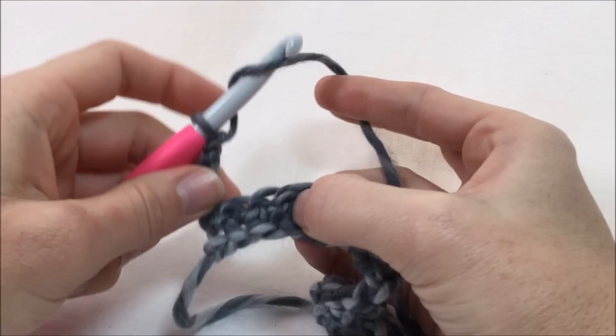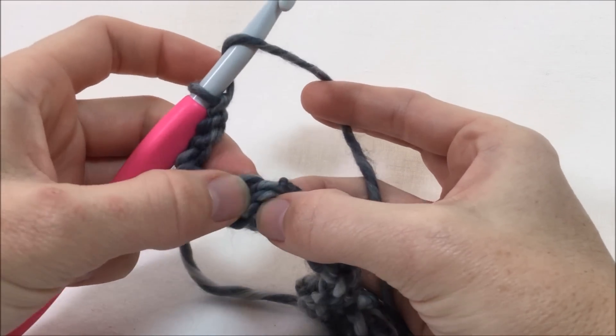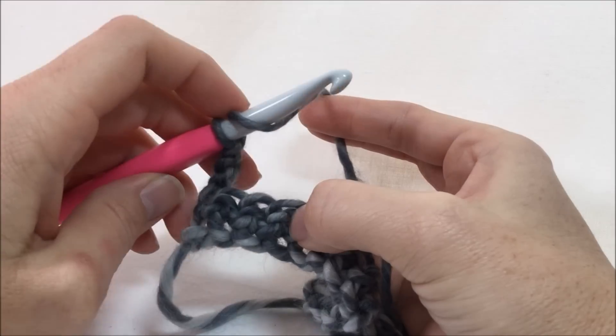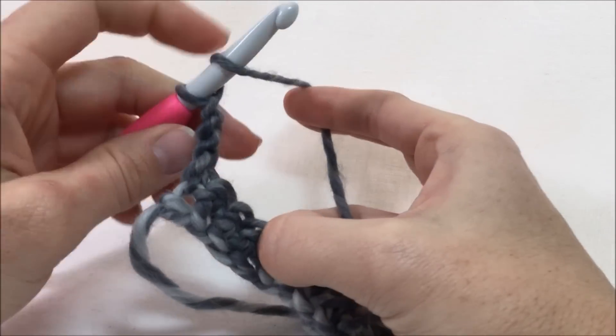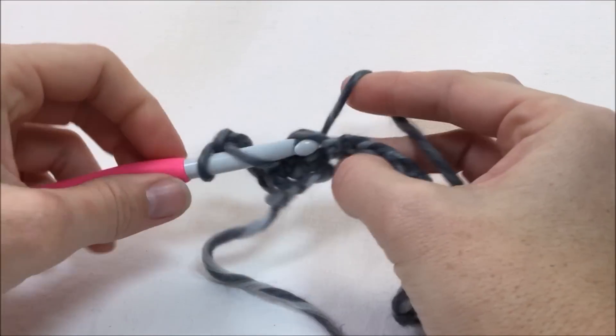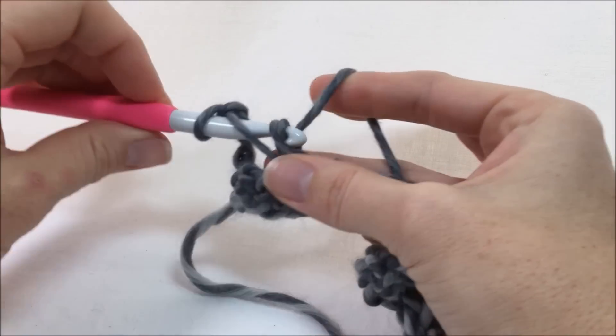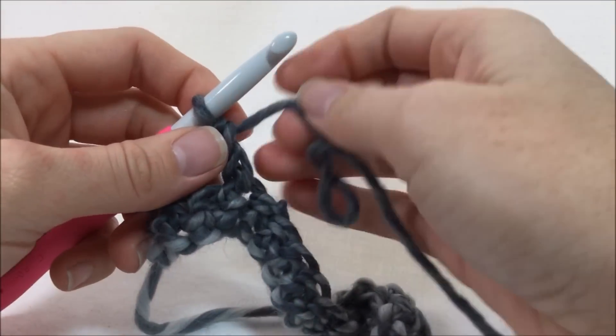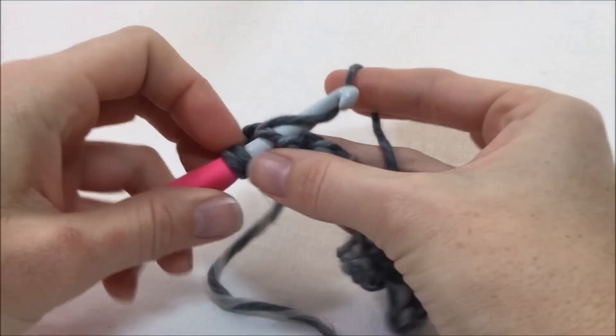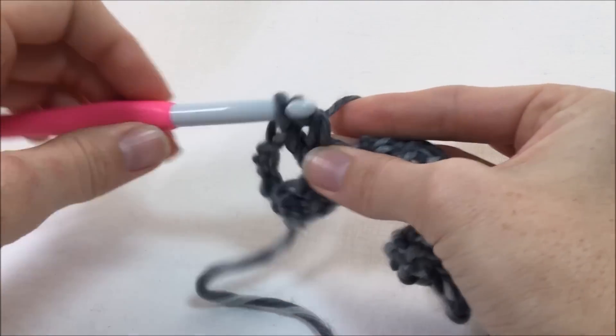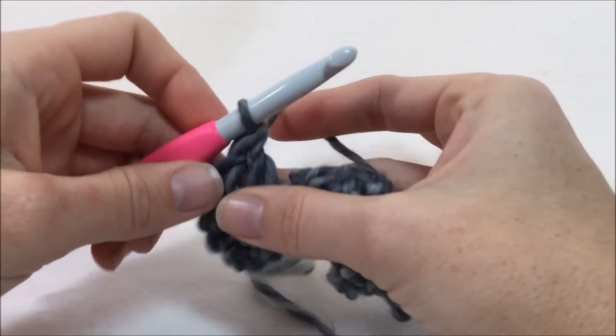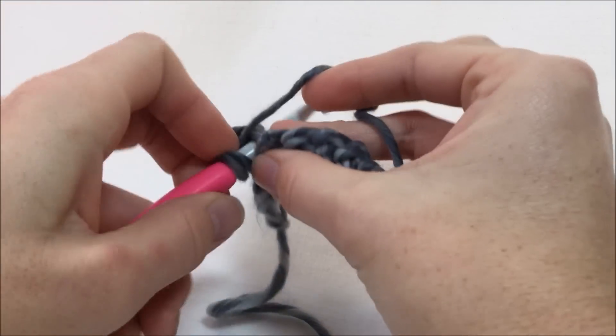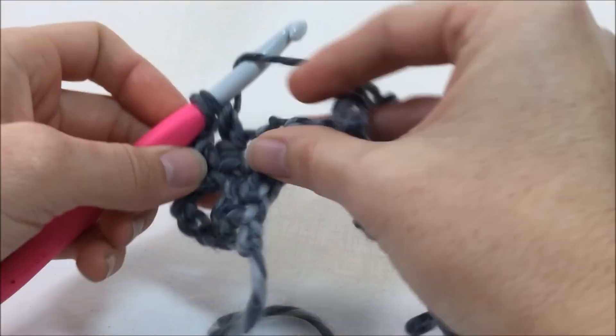So now we're going to do our little v-stitch. So it's going to be all in this stitch here: two double crochets, a chain one, and then two more double crochets. So we yarn over, insert our hook in, yarn over, pull up a loop, yarn over, pull through the first two, and pull through the second two. This yarn is twisting like crazy. So again I do another one. Then I'm going to chain one.